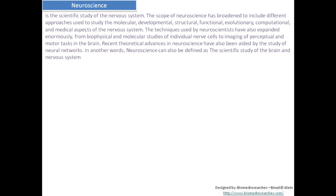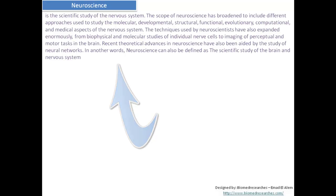Before that, we will have a brief idea about the different sciences used in the field, the differences between them, and the definition of each one. We start with neuroscience, which is the scientific study of the nervous system. Its scope has broadened to include molecular, developmental, structural, functional, evolutionary, and medical aspects of the nervous system. Techniques have expanded from biophysical and molecular studies of individual neurons to imaging of perceptual and motor tasks in the brain.